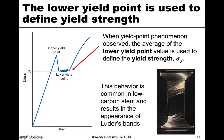This yield point phenomenon is common in low carbon steels. When it happens, if you actually look at the test sample, you get the appearance of distinct bands at angles along the sample — these are known as Lüders bands. The appearance of the lower and upper yield point coincides with Lüders bands, which is a phenomenon that essentially only happens in low carbon steel.